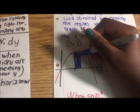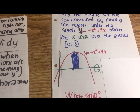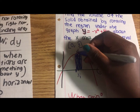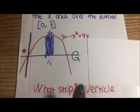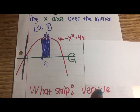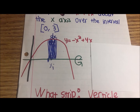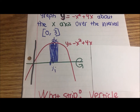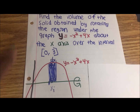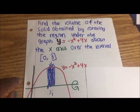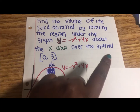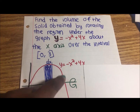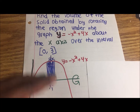Now let's identify the rotating axis. The problem says it's being rotated about the x-axis, so the rotating axis is the x-axis. Since our strip is vertical and the rotating axis is horizontal, we can ask: is the strip parallel or perpendicular to the rotating axis?